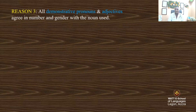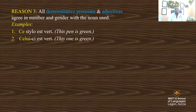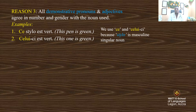Reason three: demonstrative pronouns and adjectives agree in gender and number with the noun. Examples: 'Ce stylo est vert' — 'ce' is a demonstrative adjective meaning this or that. This pen is green. Since stylo is masculine singular, we use 'ce'. 'Celui-ci est vert' — this one is green, using the demonstrative pronoun.